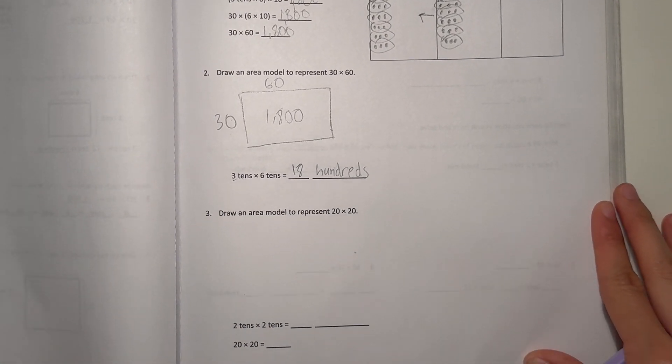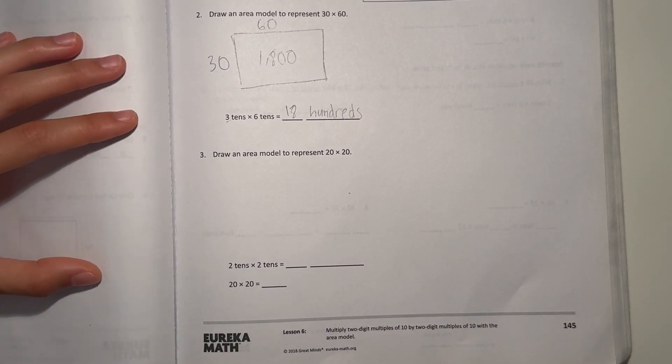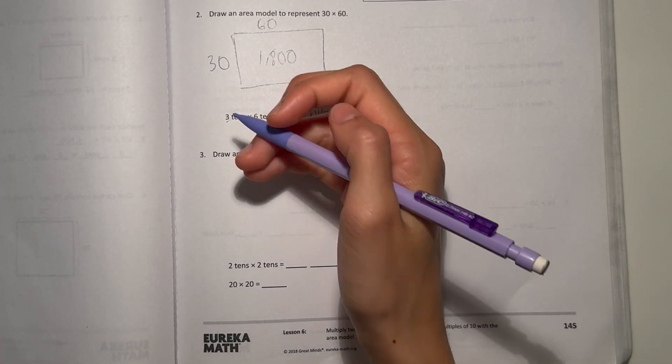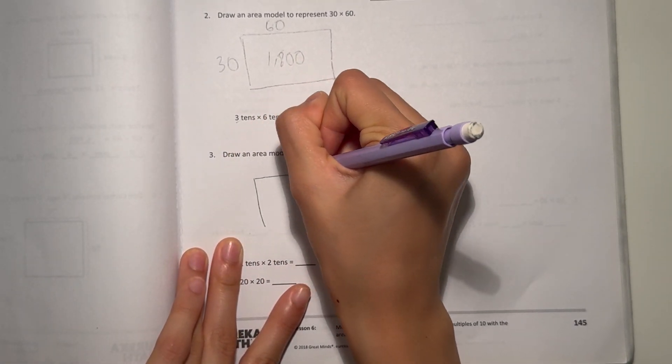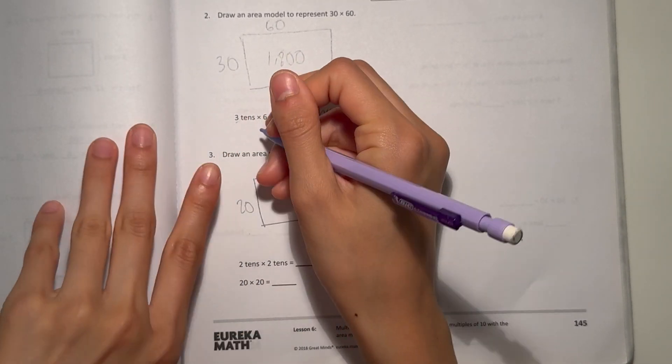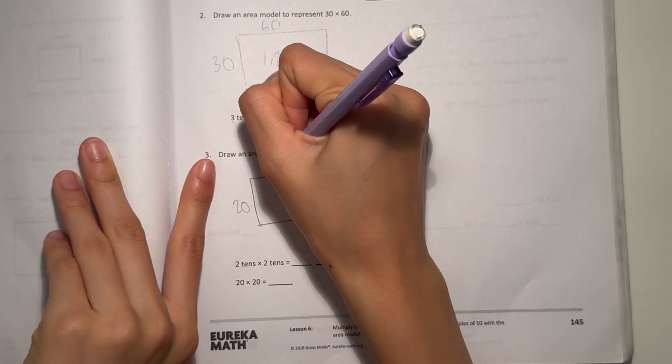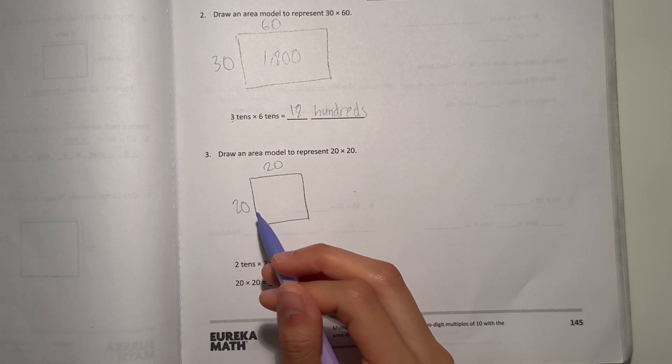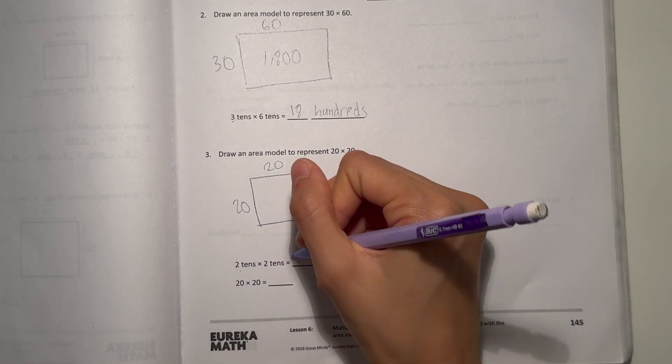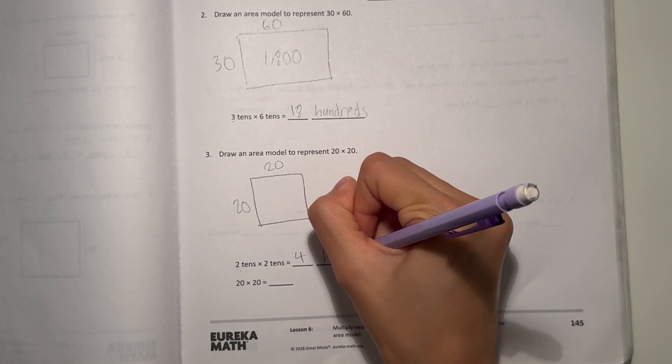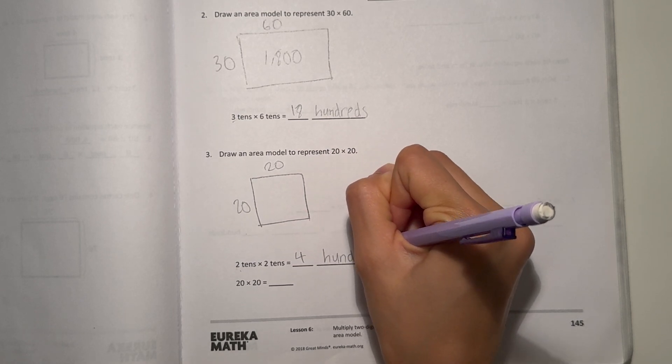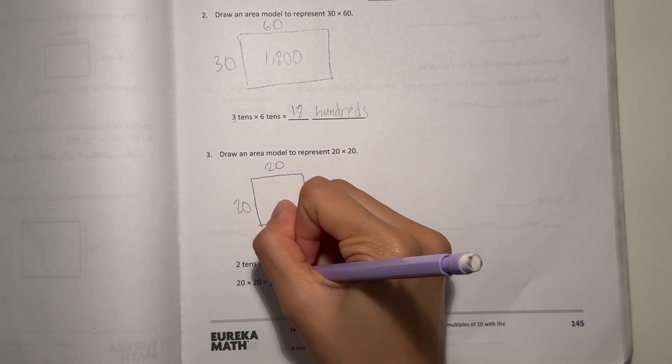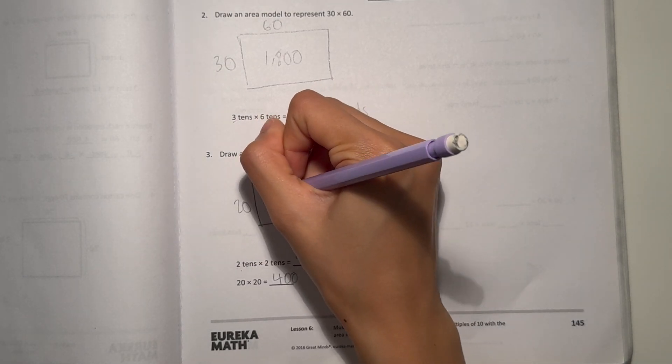Number three. Draw an area model to represent 20 times 20. So 20 times 20. Think of it as 2 tens times 2 tens, that's 4. But it's not tens, it's hundreds, because 10 times 10 is 100. So 4 hundreds would just be 400. So 20 times 20 is 400.